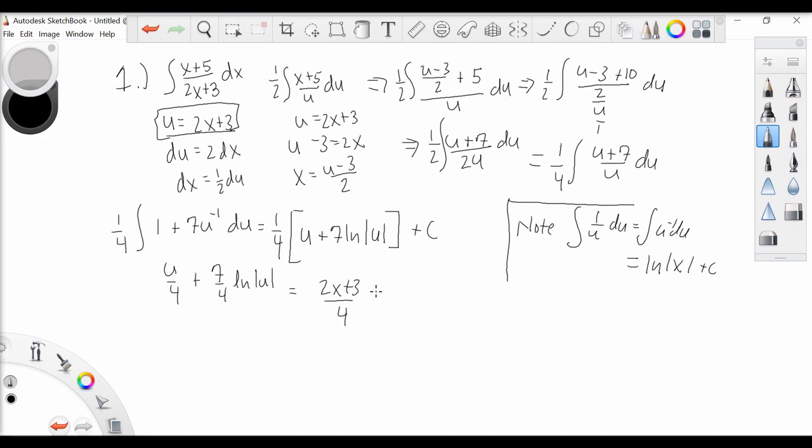Plus 7 over 4 ln of the absolute value 2x plus 3.